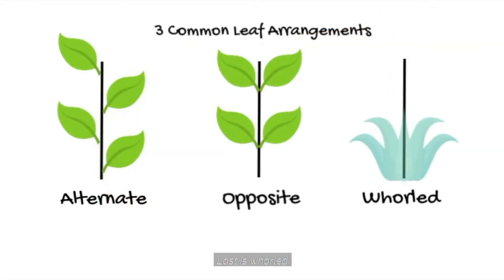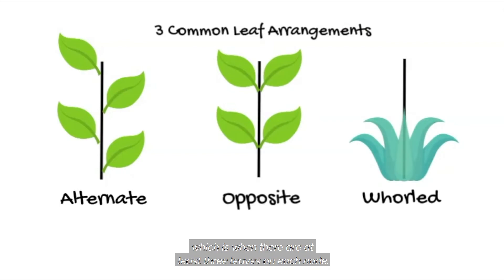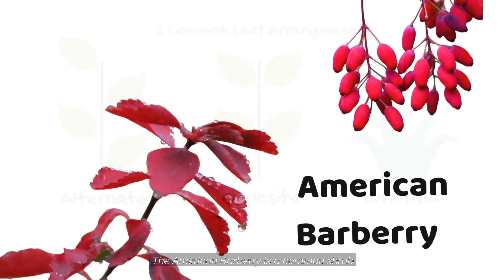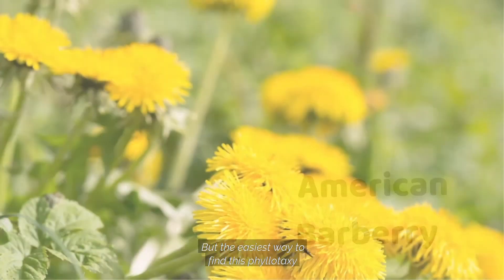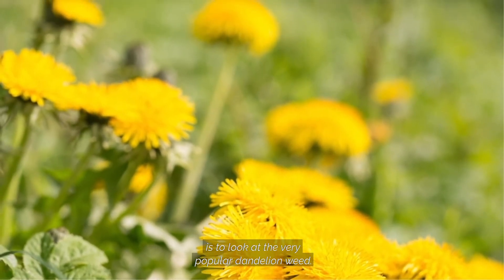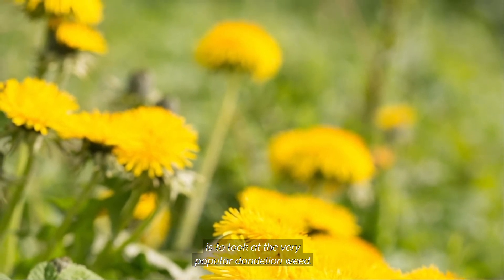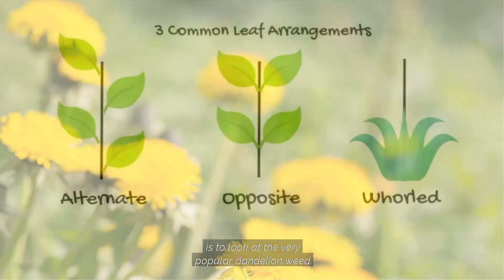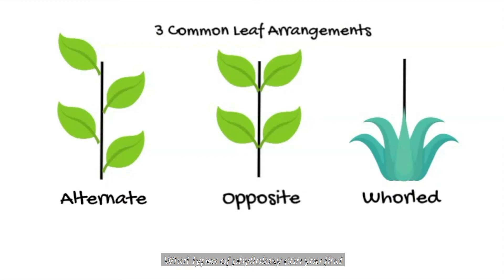Last is whorled, which is when there are at least three leaves on each node. The American barberry is a common shrub with whorled leaves, but the easiest way to find this phyllotaxy is to look at the very popular dandelion weed. What types of phyllotaxy can you find on your next adventure?